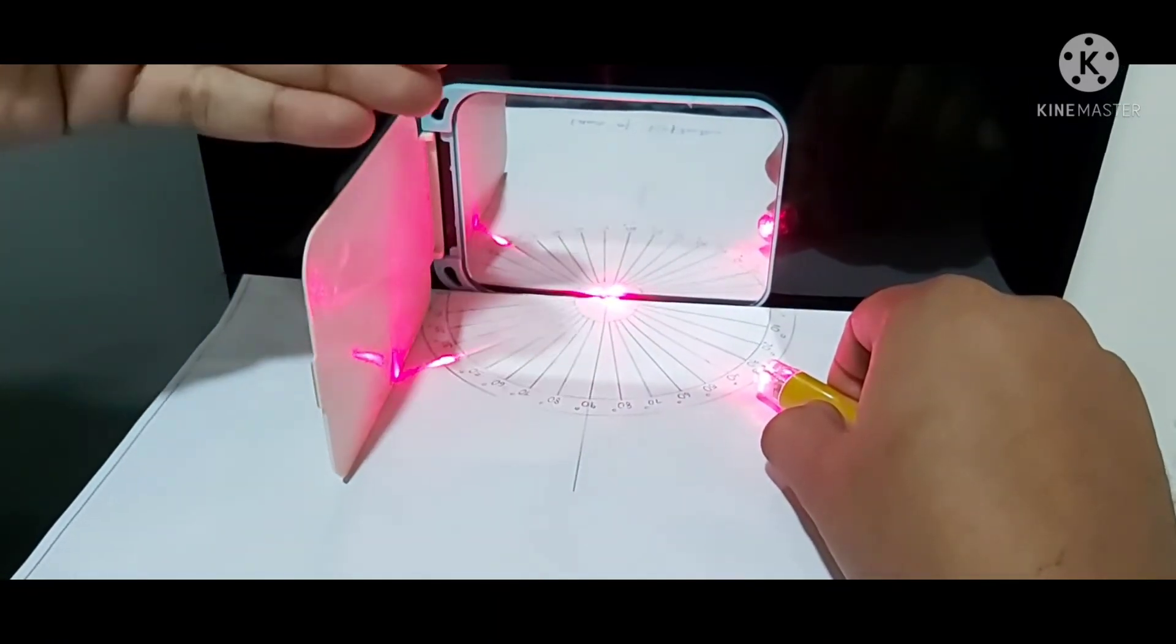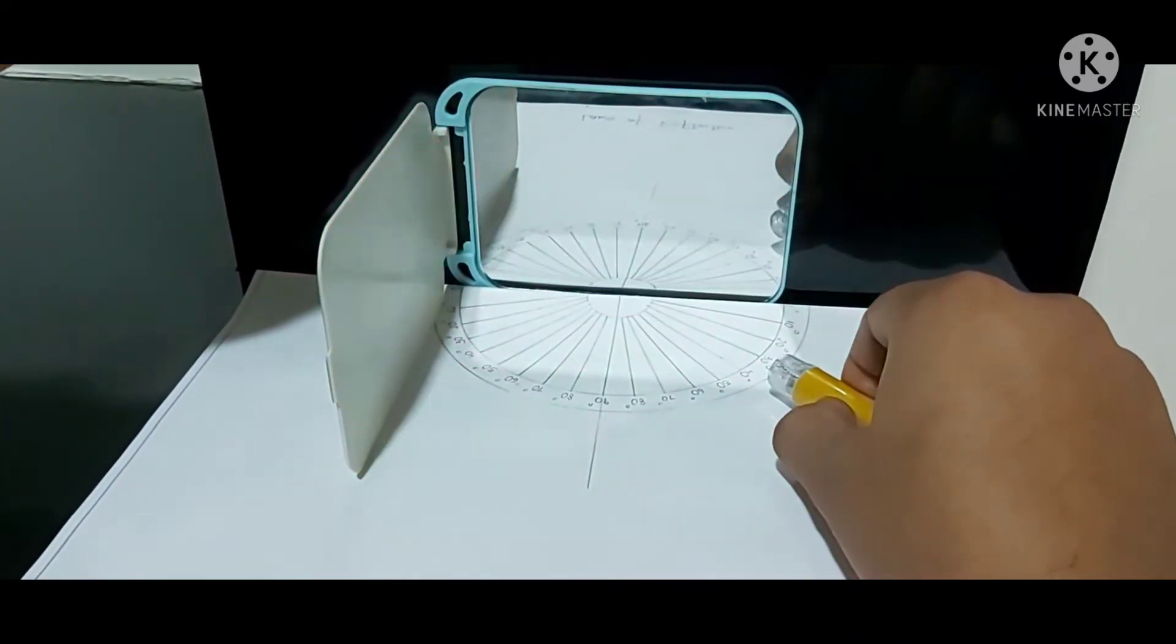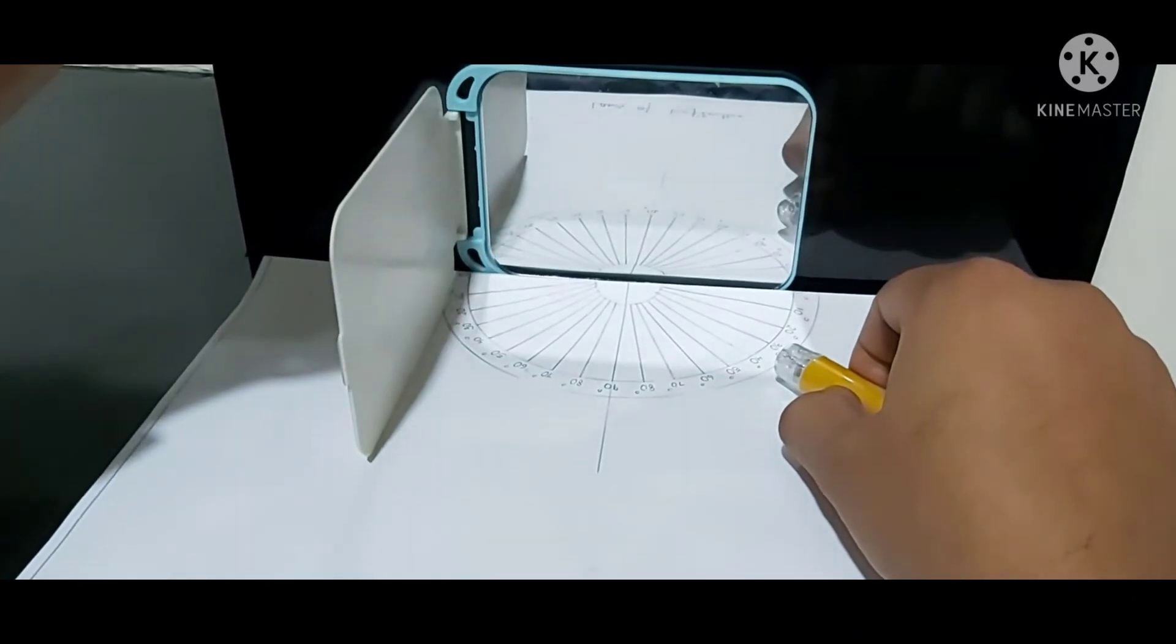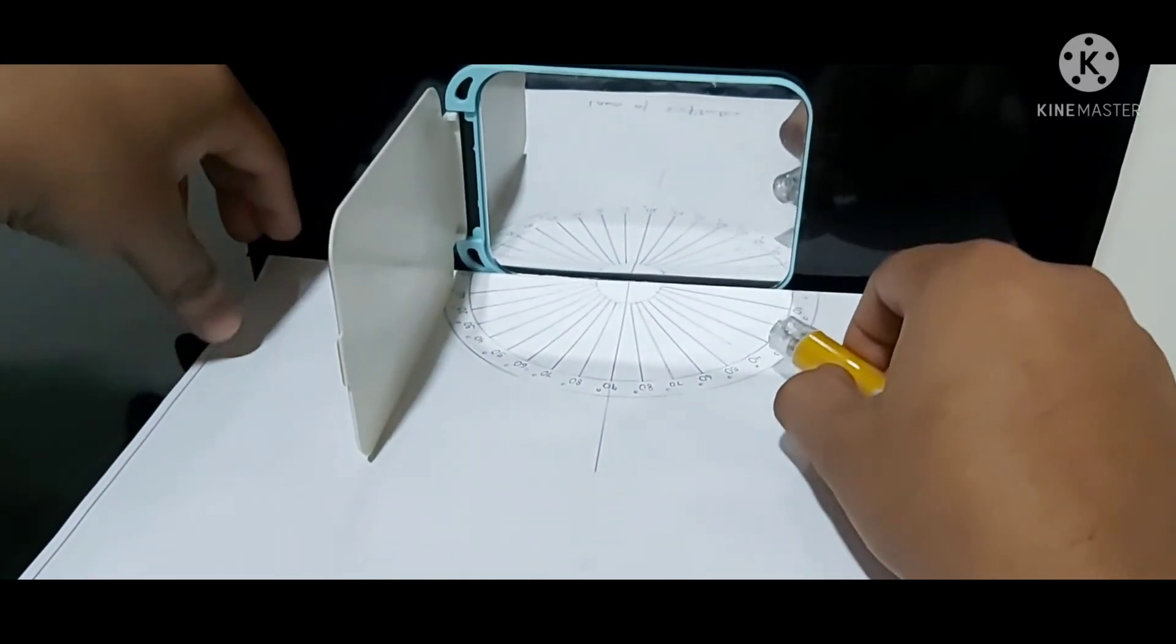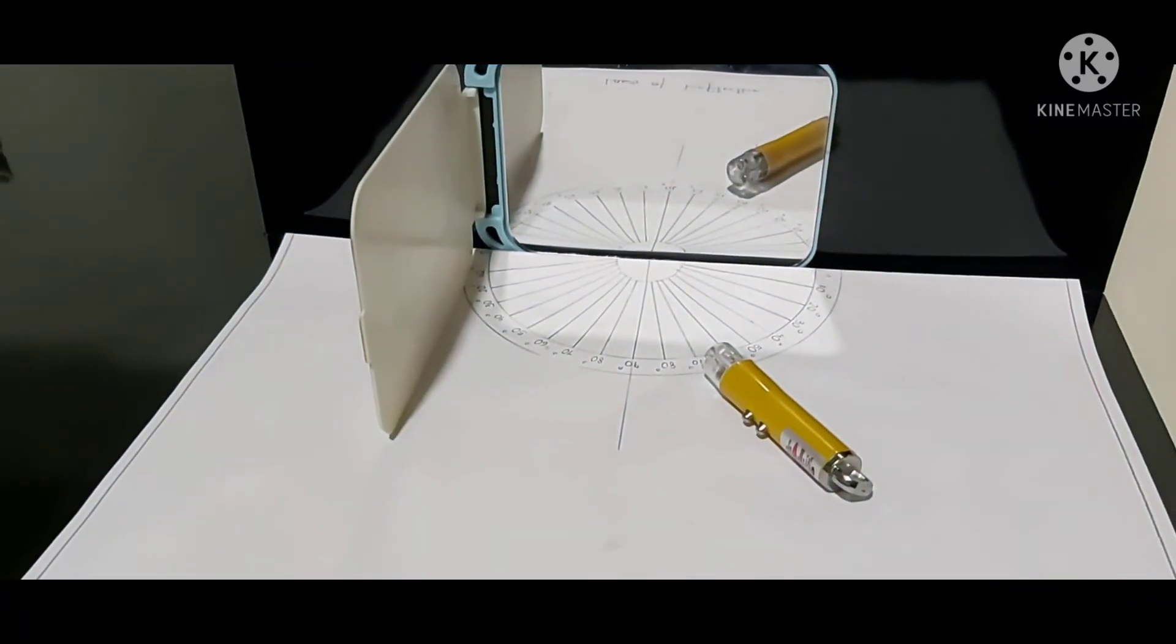On this side of the mirror, the front side, these three have a common point. That means the incident ray, normal, and reflected ray are on the same side of the plane. These are the three laws of reflection. Thank you.